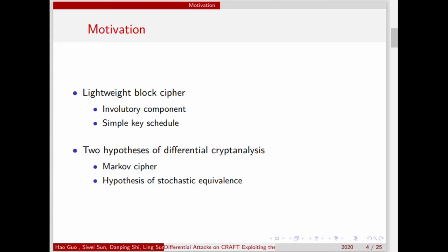Differential attack is one of the most powerful techniques to attack a block cipher. There are two hypotheses of differential attack: the Markov cipher hypothesis and the hypothesis of stochastic equivalence. The Markov cipher hypothesis says that the differential probability will not be influenced by the value of plaintexts. The hypothesis of stochastic equivalence is that the differential probability will not be influenced by the value of the key. In fact, both of the two hypotheses will not always hold. We focus on the hypothesis of stochastic equivalence, and show how to use the value of the key to find a more effective differential characteristic.